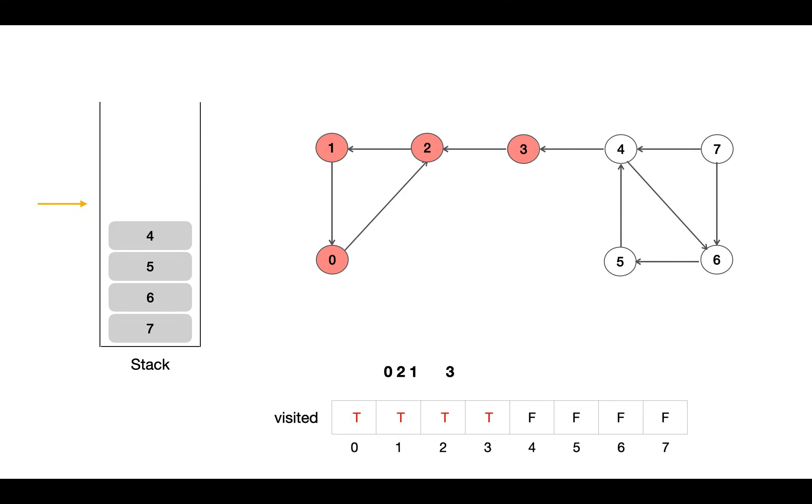Then we again start DFS traversal from the top vertex in the stack and that's 4. Then we go to 6 and 5. From 5 we can't go to any vertex as 4 is already visited, so here we found another SCC component.